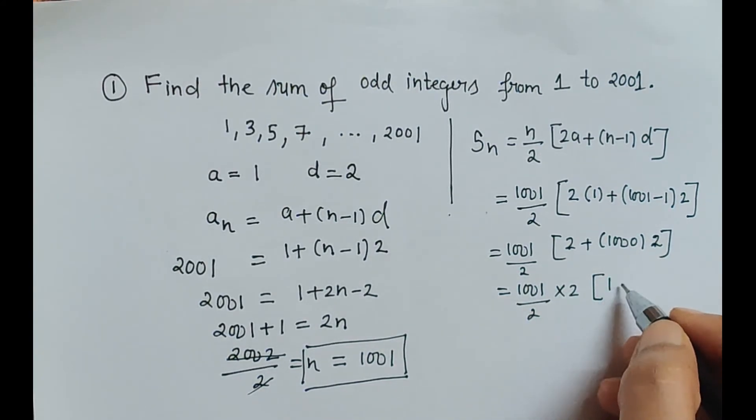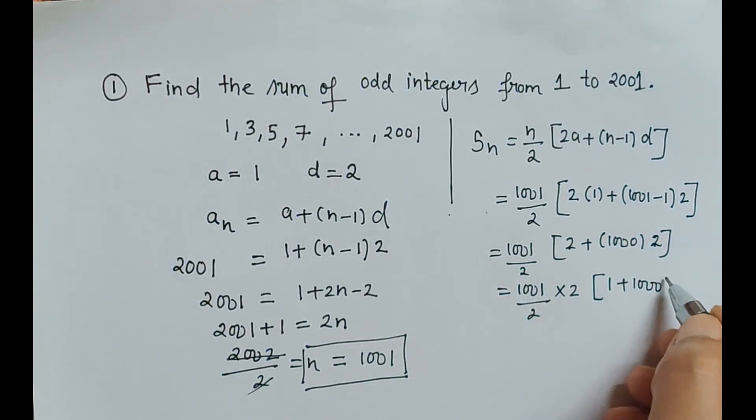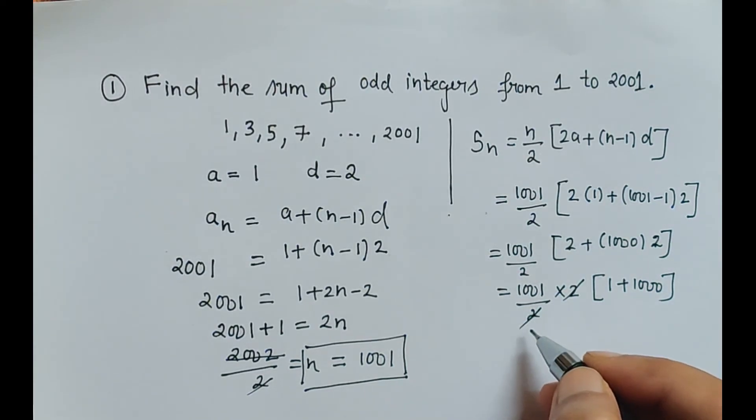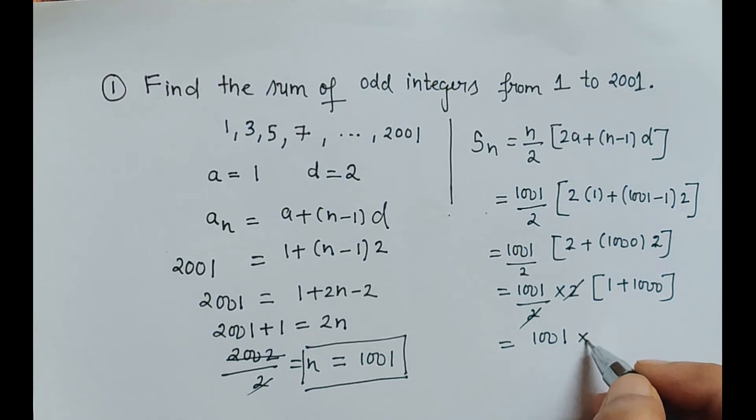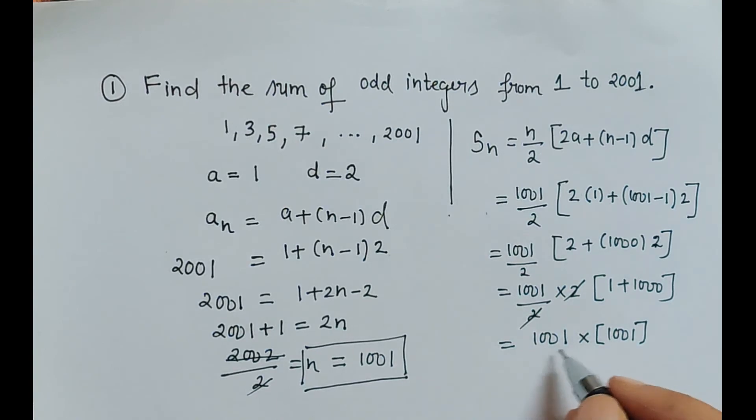When we take out 2 common which gets cancelled with the denominator, we are left with 1001 into 1001 when 1 is added to this. So multiplication of these two numbers is nothing but 1002001.